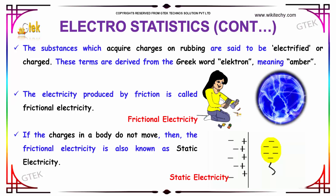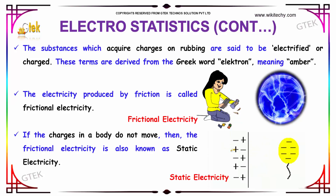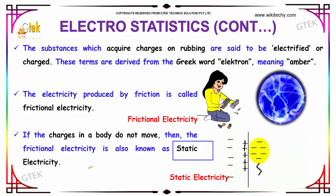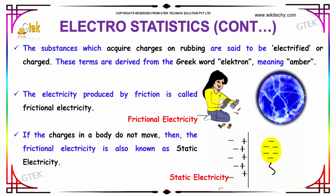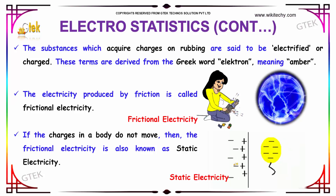If we consider charges in a body that do not move, then we can imply the concept of frictional electricity that is called static electricity — where the charges in a body do not move. An example of static electricity is shown here.